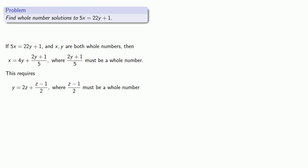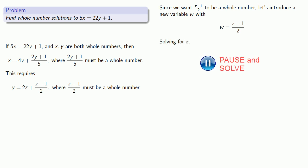And once again, since we want z minus 1 over 2 to be a whole number, let's introduce a new variable, w, with w equal to z minus 1 over 2, and solving for z gives us z equals 2w plus 1. But notice that we can find z without any sort of division, and so as long as w is a whole number, z will be as well.